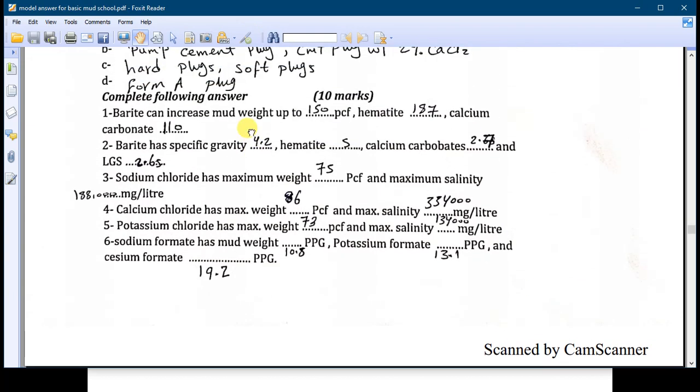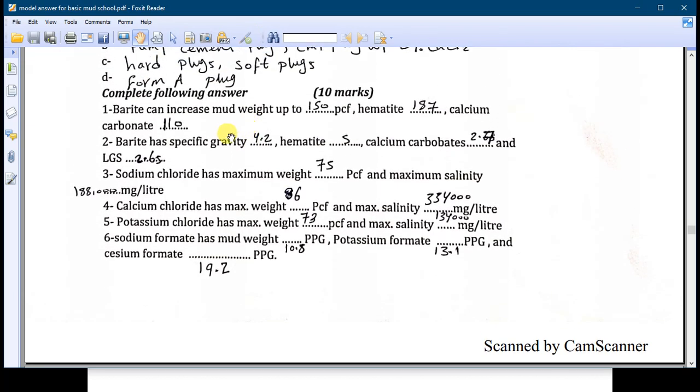The final question is to complete the answers. Number one, this is very important question: barite can increase mud weight up to 150 PCF, hematite 187, and calcium carbonate is 110 PCF. Number two: barite has a specific gravity 4.2 and hematite about 5, calcium carbonate is 2.7, and the low gravity solid is 2.65.